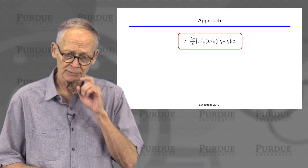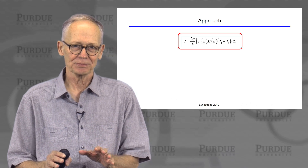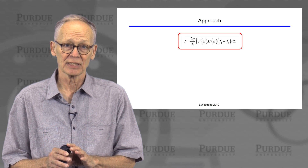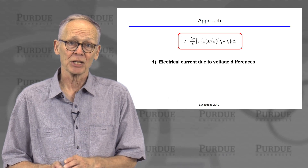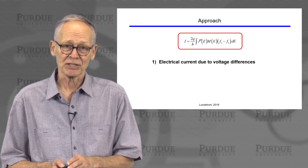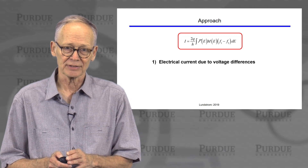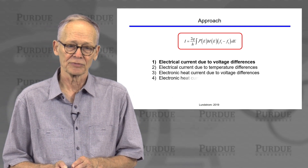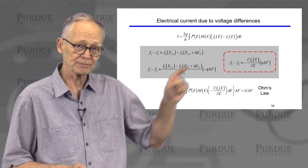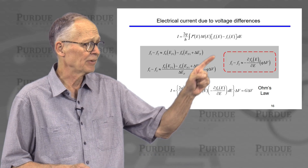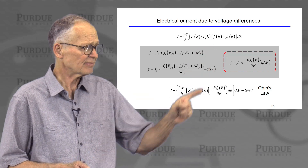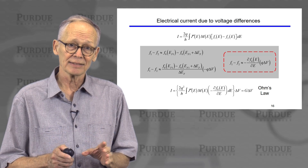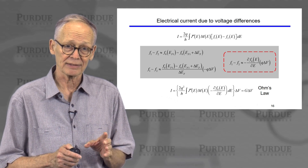We're going to use the Landauer approach to evaluate the four electrical transport coefficients and ultimately the lattice thermal conductivity as well. We begin in this section by talking about electrical current due to voltage differences, which gives us the electrical conductivity. We start at the Landauer expression: everything depends on the difference in Fermi levels. The Fermi functions differ because the Fermi levels in the two contacts differ due to an applied voltage.